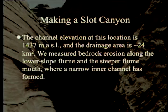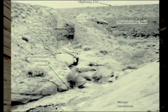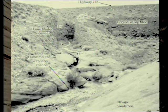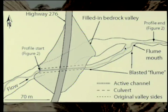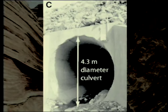They measured bedrock erosion along the lower slope flume and the steeper flume mouth where a narrow inner channel has formed. There's a drawing showing the fill, the culvert, the blasted flume coming out, and the mouth beyond that. The culvert itself is 14 feet in diameter, with a little ultrasonic monitor measuring how deep the water is, though it's not very accurate for very small depths.